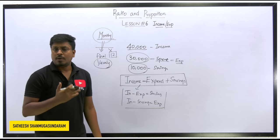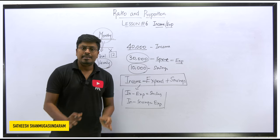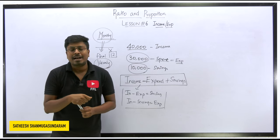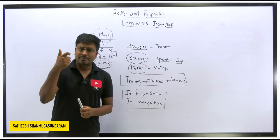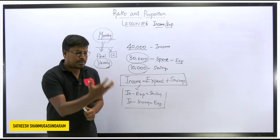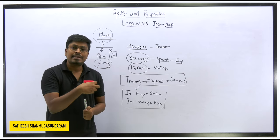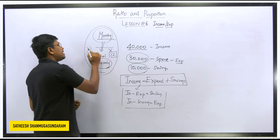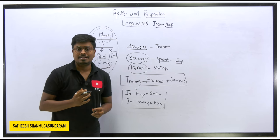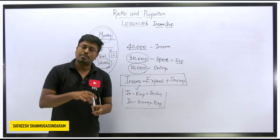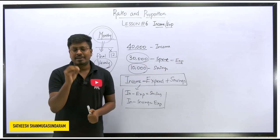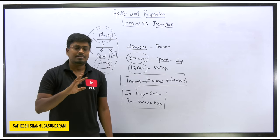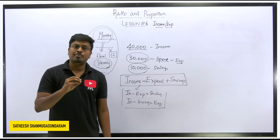Similarly, sometimes all values are given on a yearly basis but the final answer is asked in monthly terms — in that case, divide your answer by 12. Most students find the correct answer but mark the wrong option by not reading the question carefully. Always check whether the final answer is required on a yearly or monthly basis.